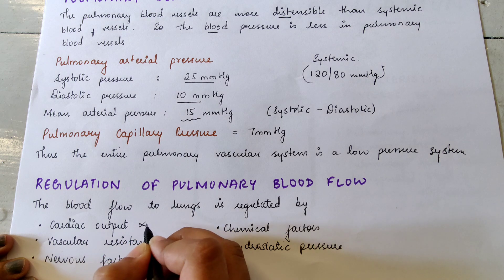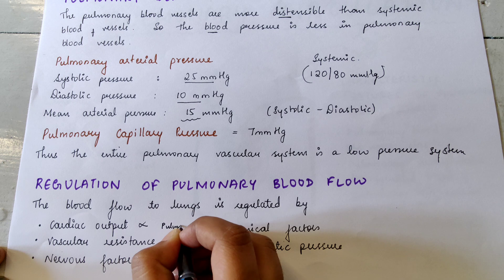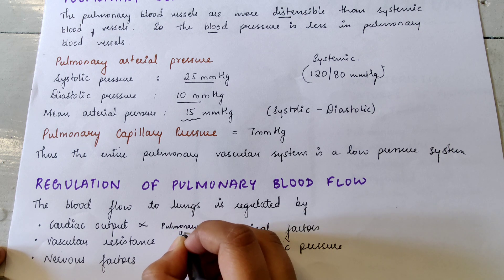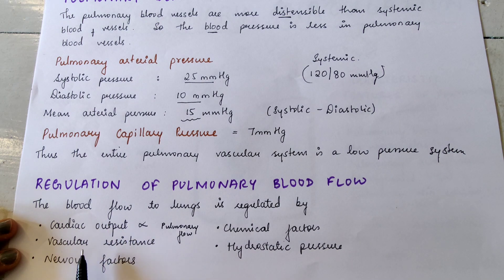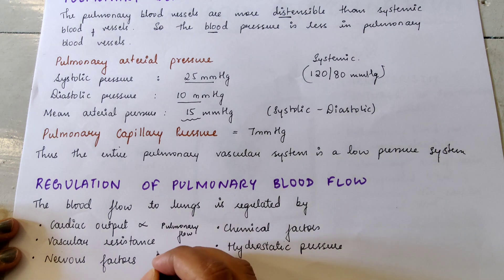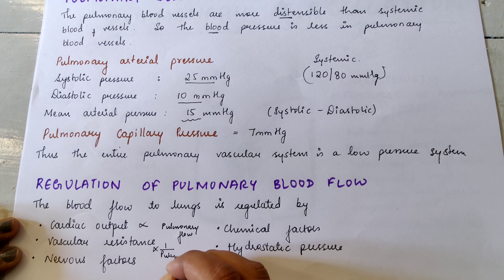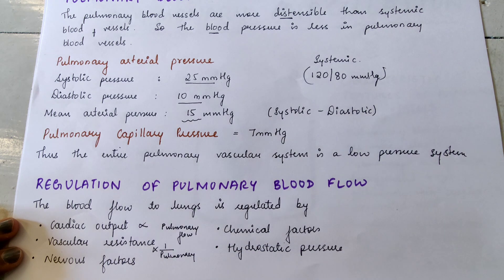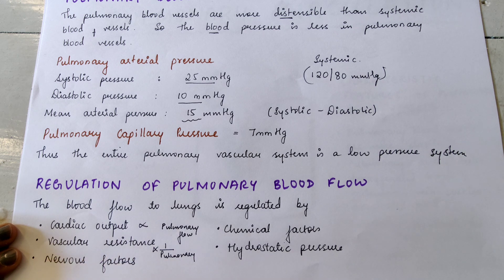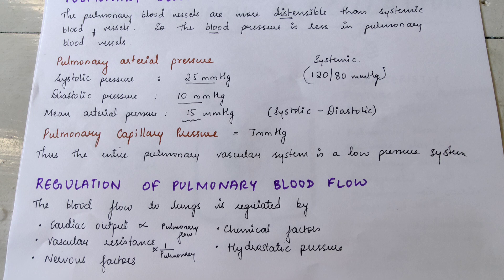Cardiac output is always proportional to pulmonary blood flow — if cardiac output is more, pulmonary blood flow is more; if cardiac output is less, pulmonary blood flow is less. Vascular resistance is inversely proportional — if pulmonary vascular resistance is more, blood flow will be less, and vice versa. Nervous factors work through sympathetic and parasympathetic activity via vasoconstriction and vasodilation. Chemical factors such as lack of carbon dioxide or oxygen also affect blood flow.